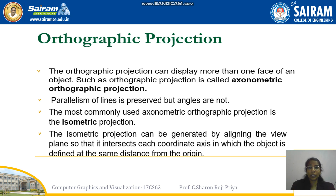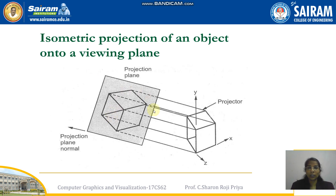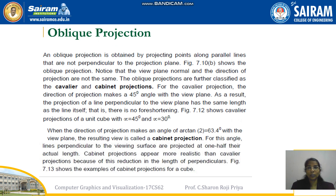Axonometric projection is divided into three types: isometric, dimetric, and trimetric. In isometric projection, the angle between the three axes is equal — that is, 120 degrees each, totaling 360 degrees. Isometric projection is generated by aligning the view plane so that it intersects each coordinate axis at the same distance from the origin. The angle between the coordinate axes is 120 degrees in isometric projection.